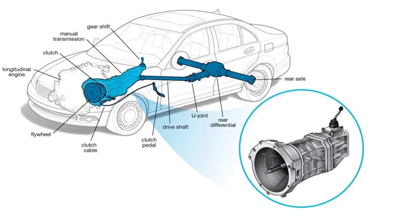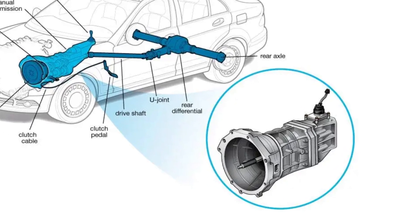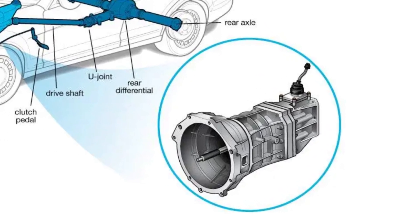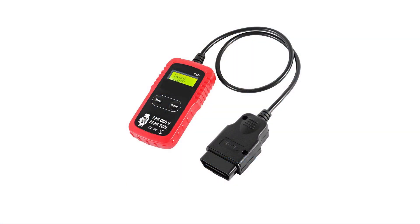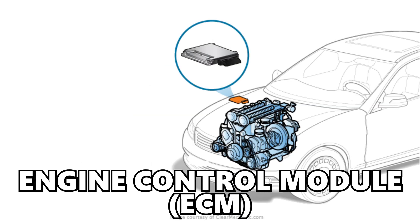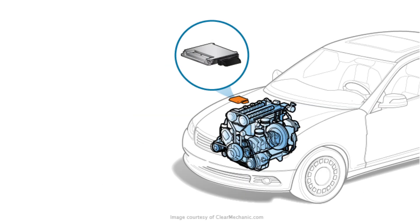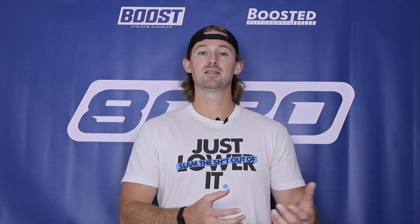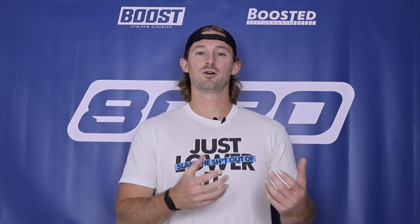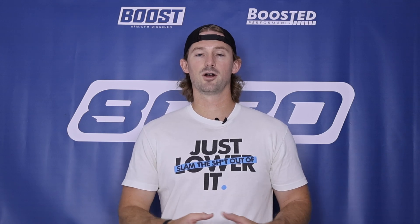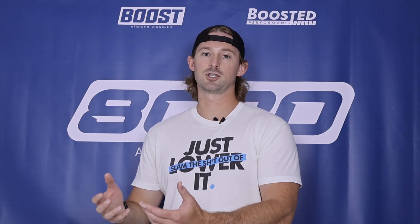Ultimately, a P0700 transmission control system means that you have an issue somewhere within your transmission. When you use a more generic, less expensive scan tool, you're typically accessing the engine control module or the ECM, and so you'll see all of the engine error codes or fault codes that appear on the ECM, but the ECM is separated from the transmission control module.